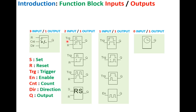The number of input terminals could vary: no input, single input, double input, or triple input. It is very important to identify the terminals along with their labels. Each terminal must have its own label — for example: TRG (trigger), EN (enable), R (reset), S (set), CNT (count), and DIR (direction). These labels come from the help manual of the software.